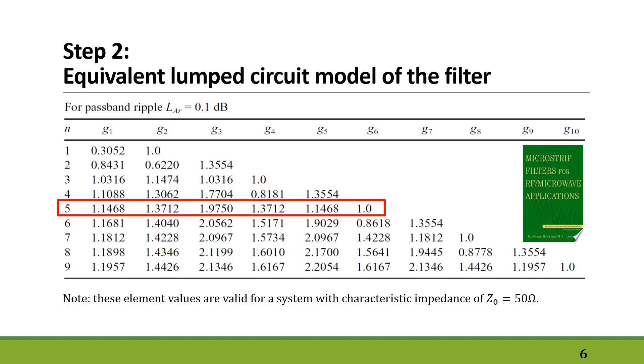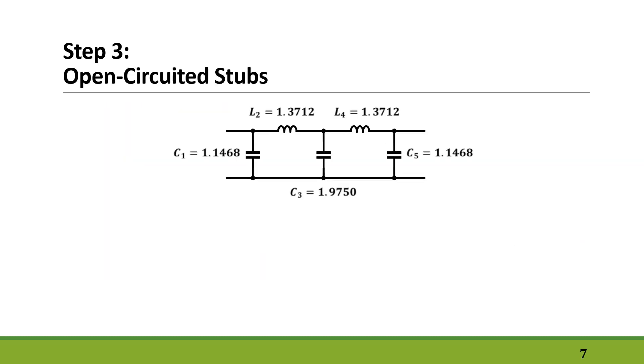You should at least know the type of the filter you are designing, the passband ripple, and your system impedance. That's so you don't use another table by mistake. So this is our low-pass filter circuit, and we want to use microstrip stubs instead of lumped elements.